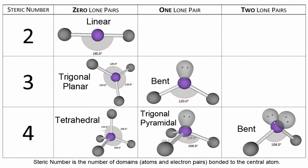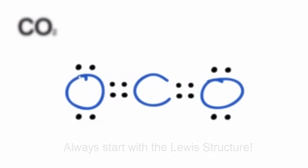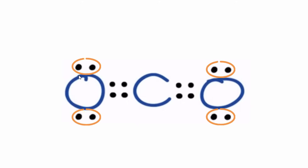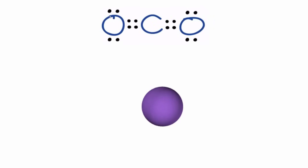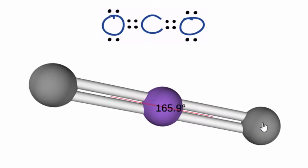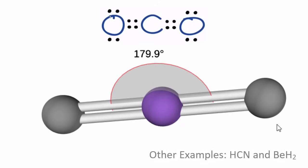When we have a steric number of two with no lone pairs, that means there are two atoms attached to the central atom and there are no lone pairs — we have a linear molecular geometry. CO2 is a good example. We'll start with the Lewis structure, and you can see that central carbon atom has no lone pairs. There are two oxygen atoms, and we're not concerned about lone pairs on the oxygen atoms — we only worry about the central atom. Each oxygen is double bonded, and when they spread out to be as far away from each other as possible, we have a linear geometry with a bond angle of 180 degrees.